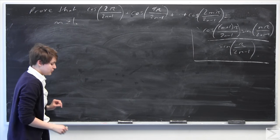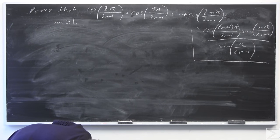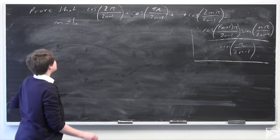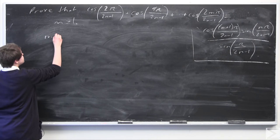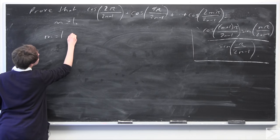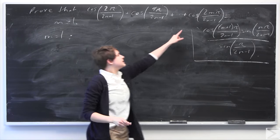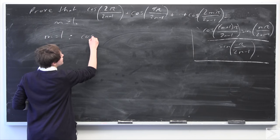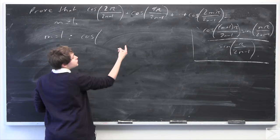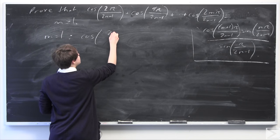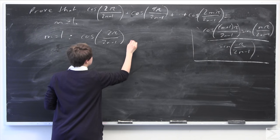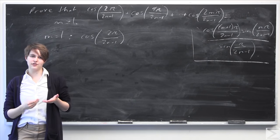Now I'm going to test the case where m is equal to 1. When we test m equals 1 using the expression cosine 2m pi over 2n minus 1, we're going to get cosine of 2 pi over 2n minus 1 in the numerator. That's the left-hand side of our expression.